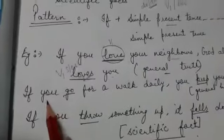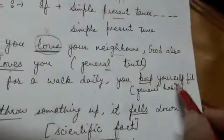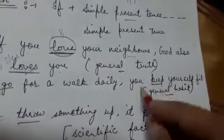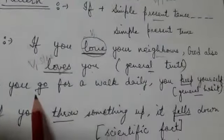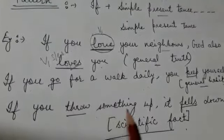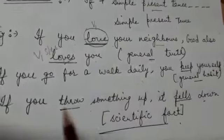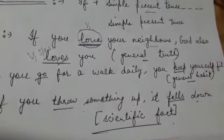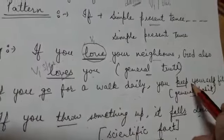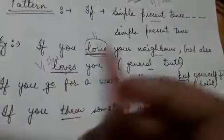Next example: If you go for a walk daily — agar aap daily walk karne jatay ho — you keep yourself fit. Ye journal habit hai. And: If you throw something up — agar aap koi bhi cheez ko upar throw kerte ho — it falls down. Newton ka law hamare paas. Koi bhi cheez ko agar aap upar throw kero, toh woh niche aayegi. Condition is there.